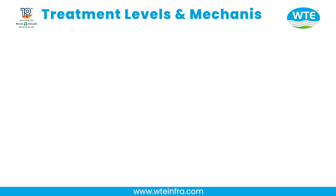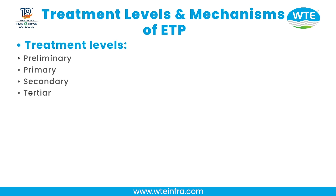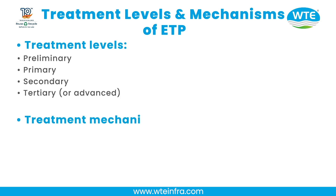Treatment levels of ETP: Preliminary, Primary, Secondary, Tertiary, and Advanced. Treatment mechanisms include Physical, Chemical, and Biological processes.